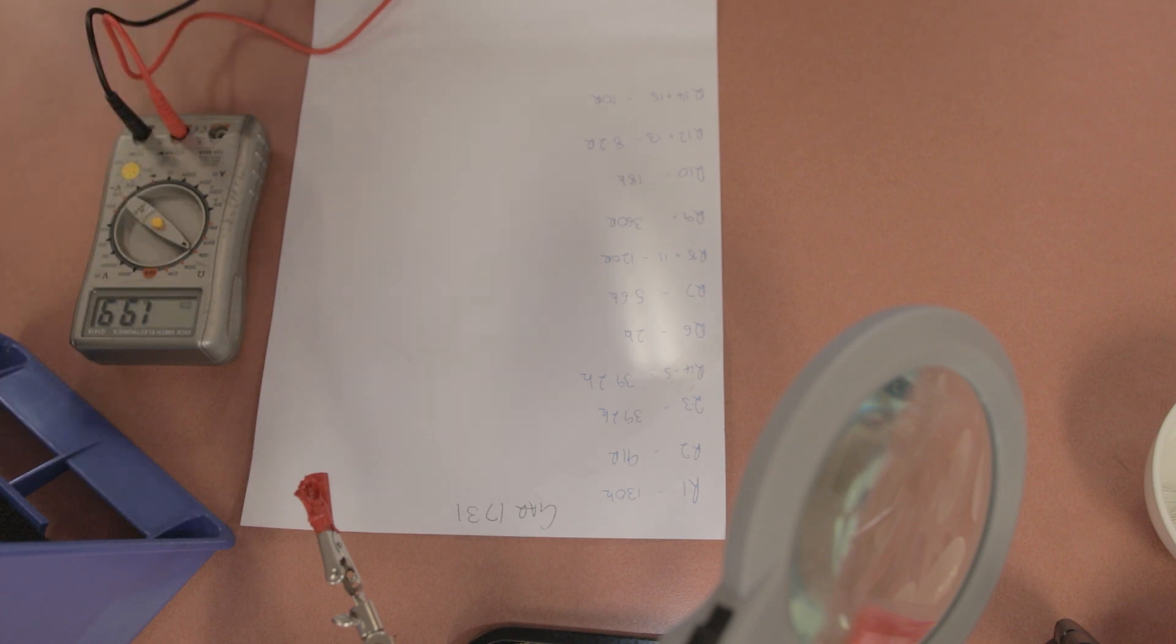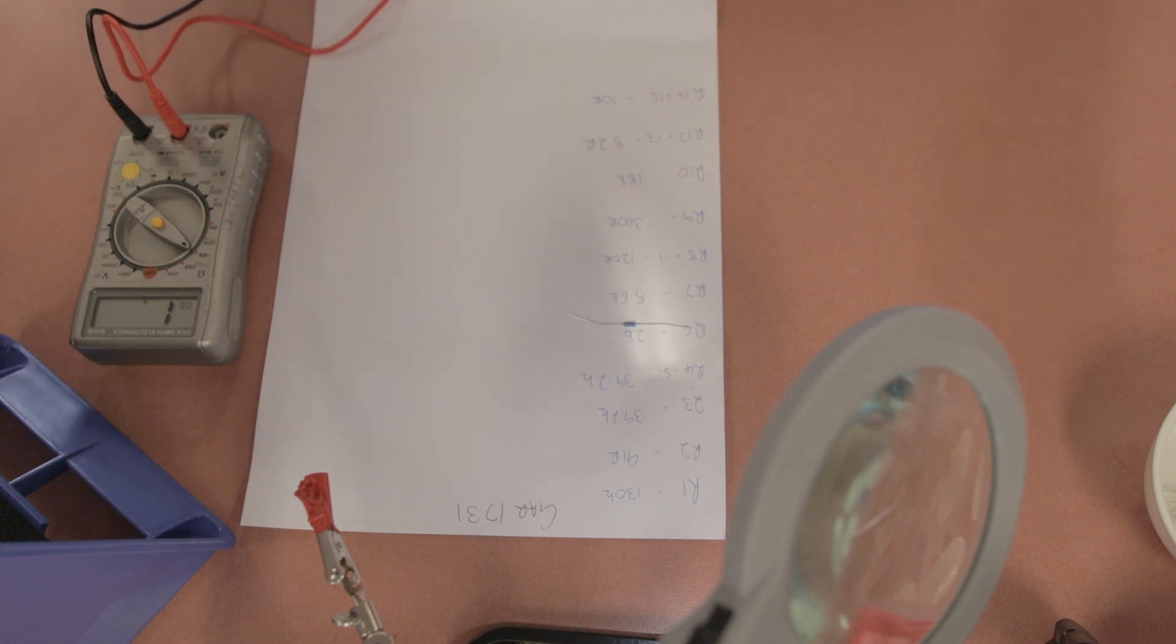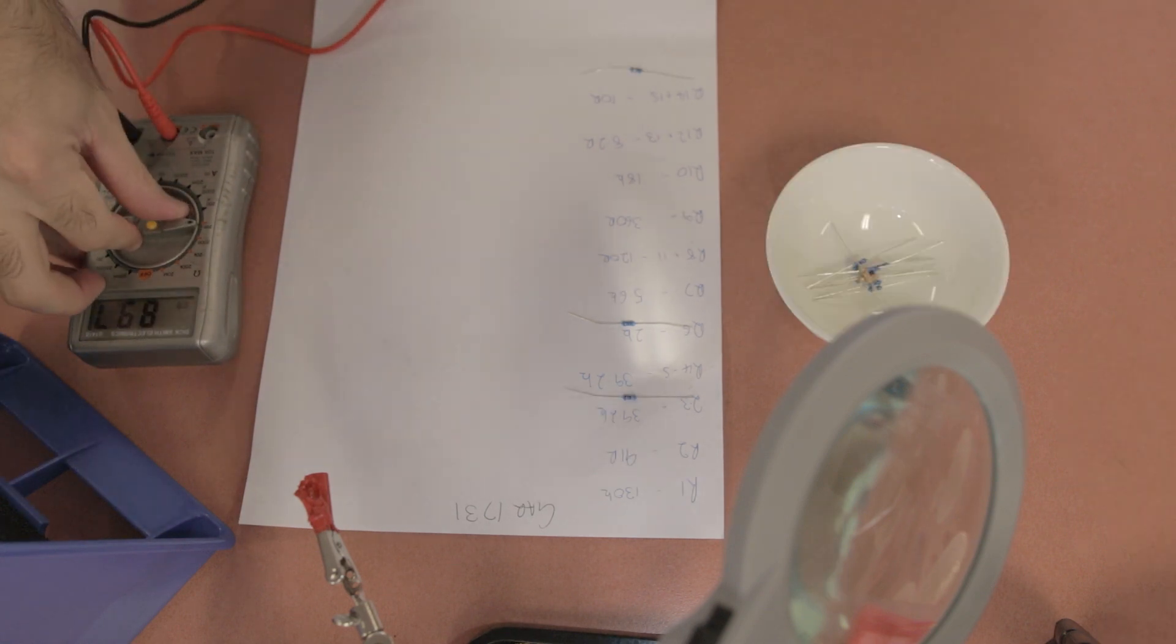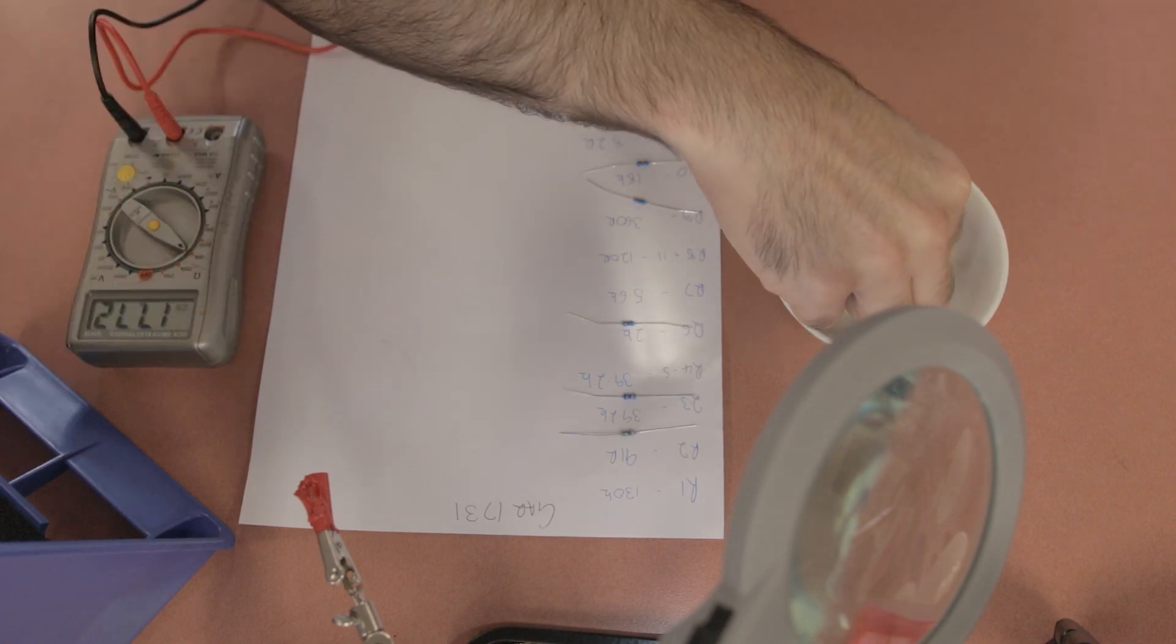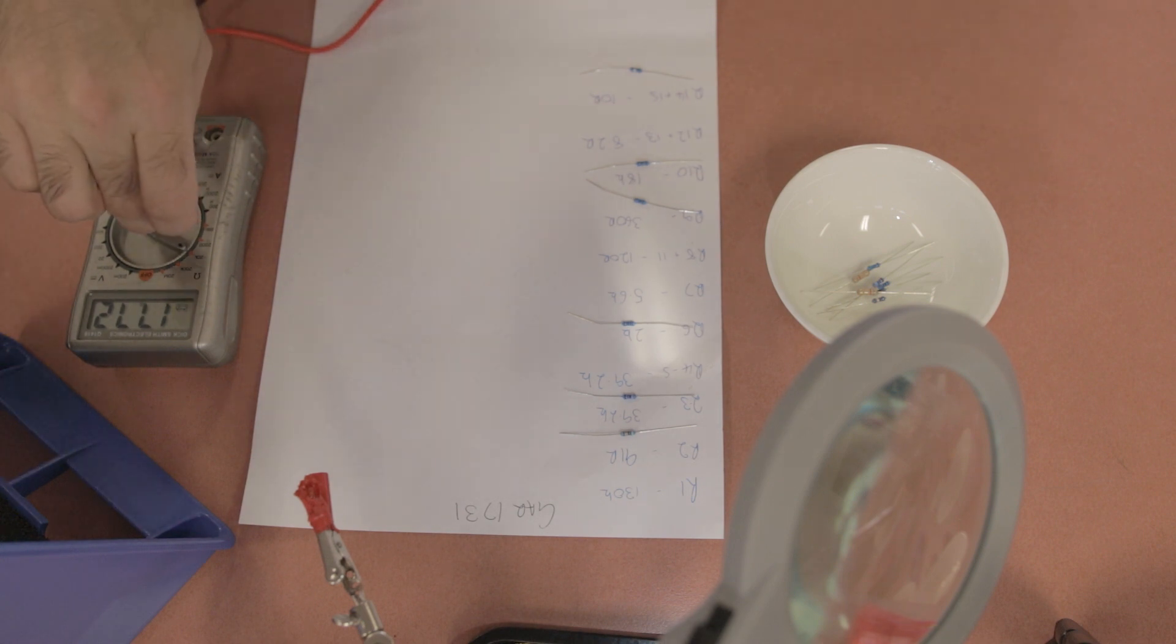So welcome back to the channel guys, and as with the last build, the GAR2520, with this GAR1731, you're going to want to start by sorting out all your resistors. It makes the job a little quicker, so if you check their values and put them on a piece of paper like this, it just makes it quicker to grab the components, and then you can easily place them.